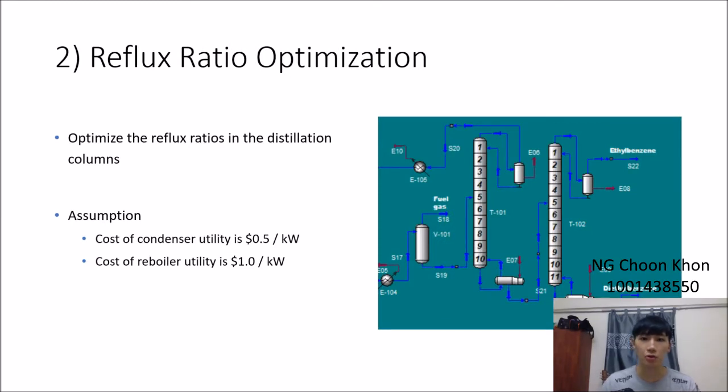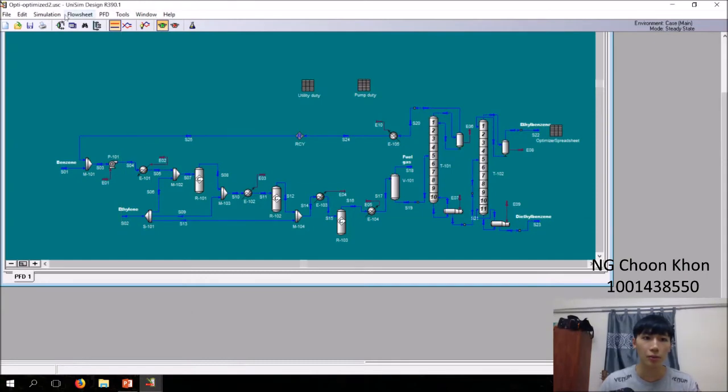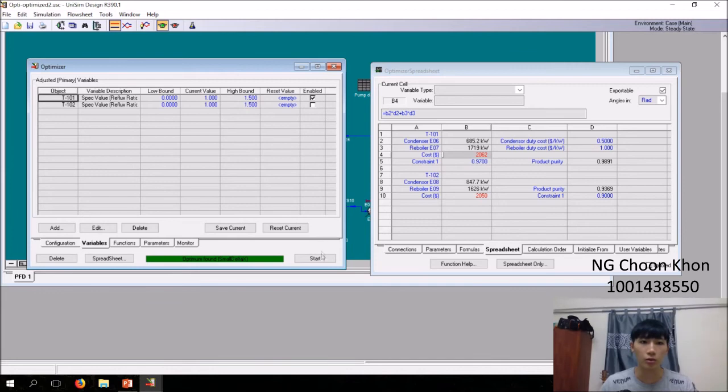Next, we try to optimize the reflux ratio for the two distillation columns. This is the objective function: 0.5 is for condenser and R is for reboiler. We put our constraint as the purity. For benzene, we need more than 90% purity. For ethyl benzene, we need more than 99% purity. We can optimize using Unisim again. For the first column, we minimize the cost v4 and set constraint d5 where purity must be greater than 97%.